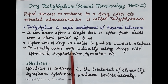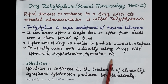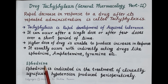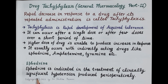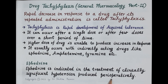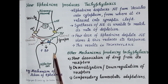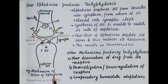Tachyphylaxis usually occurs with indirectly acting drugs like ephedrine, amphetamine, tyramine, etc. Let's understand the phenomenon of tachyphylaxis with the help of an example — the drug ephedrine. Ephedrine is sympathomimetic and increases blood pressure, so it is indicated in the treatment of clinically significant hypotension produced perioperatively — that is, before, after, and during surgery. Look at this figure; it explains the mechanism of action of ephedrine and what causes tachyphylaxis.